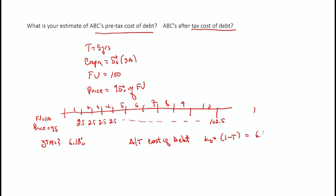So in this particular case, it's 6.18% times 1 minus the tax rate, which was 35%, so the after-tax cost of debt would be 4.016%. This is just 6.18% times 0.65.